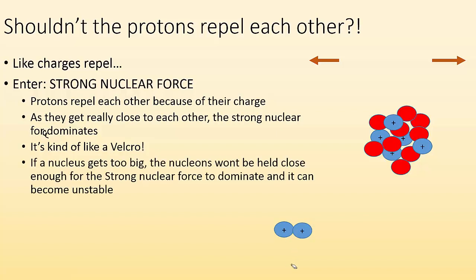So if a nucleus gets too big, though, the nucleons won't be held close enough together for the strong nuclear force to dominate, and it can become unstable. So if the nuclei get too big, that Velcro is not going to be strong enough to hold all of them together. Neutrons also are going to help with stability. If we just had a bunch of protons, it's not going to be as stable as if we threw in some neutrons there.